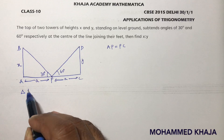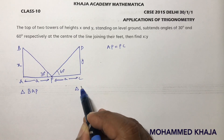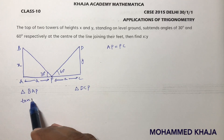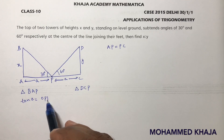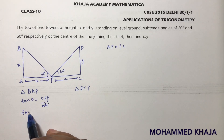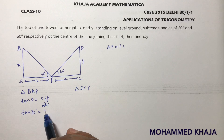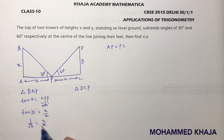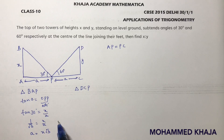First, take triangle BAP. Using tan theta equals opposite over adjacent, tan 30 degrees equals x over A. Since tan 30 is 1 over root 3, we get 1 over root 3 equals x over A. Cross multiplying gives A equals x root 3. This is equation 1.